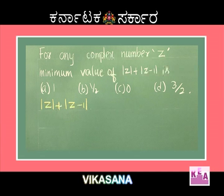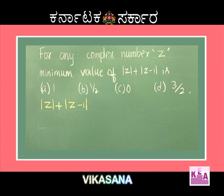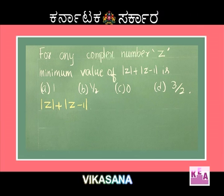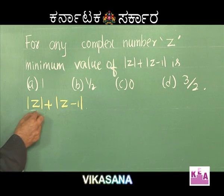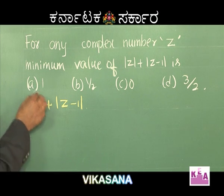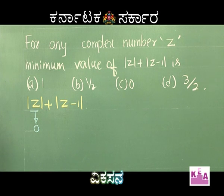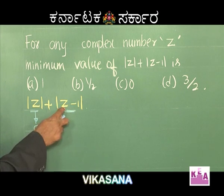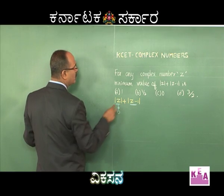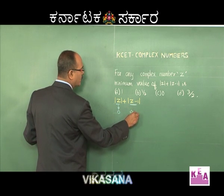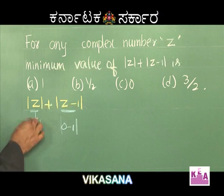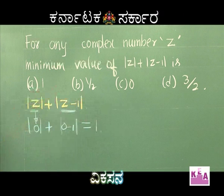The next problem: for any complex number z, find the minimum value of mod of z plus mod of z minus 1. Options are: A) 1, B) 1/2, C) 0, D) 3/2. We have mod z plus mod of z minus 1, and we want the minimum value. Let me teach you a shortcut — just make whatever is inside the modulus equal to 0. Make z equal to 0: this gives modulus of 0 plus modulus of 0 minus 1, which is 0 plus 1, equal to 1.